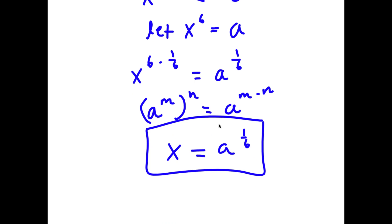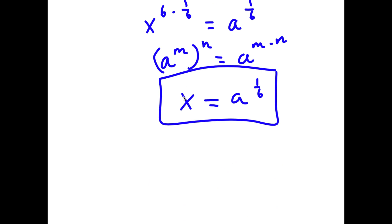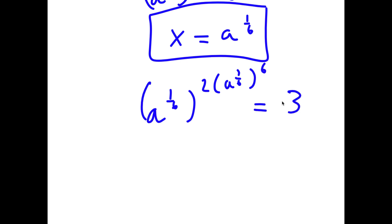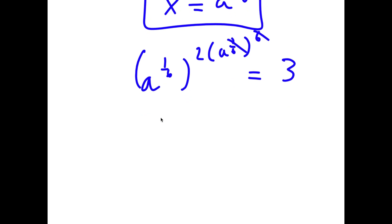Now that we know that, I'm going to replace x with a to the power of 1 over 6. So now I have a to the power of 1 over 6 to the power of 2 times a to the power of 1 over 6 to the power of 6, and this is equal to 3. The 1 over 6 and 6 cancel out, so now I have a to the power of 1 over 6 to the power of 2a, which is equal to 3.